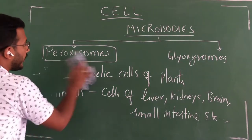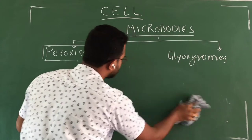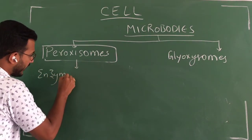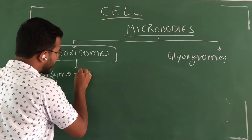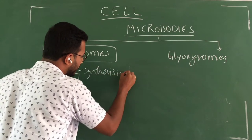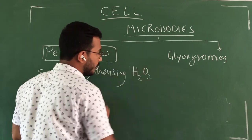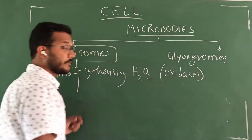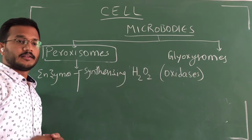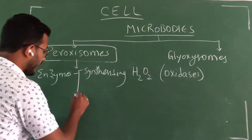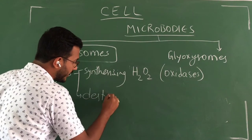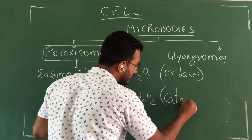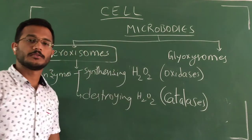Now we have to understand what are the functions of these peroxisomes. Peroxisomes have enzymes that are helpful for synthesizing hydrogen peroxide, that is H2O2. Those types of enzymes are called oxidases — the enzymes which are helpful for the synthesis of hydrogen peroxide. Peroxisomes also have enzymes for destroying H2O2, and those group of enzymes are called catalases.